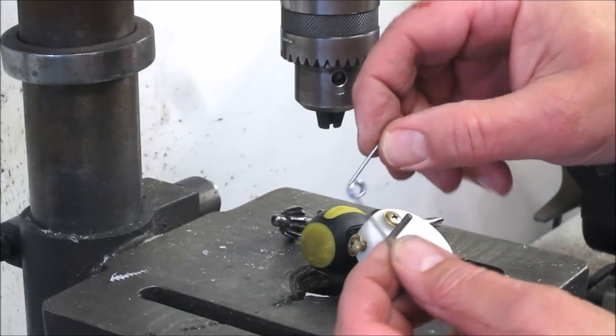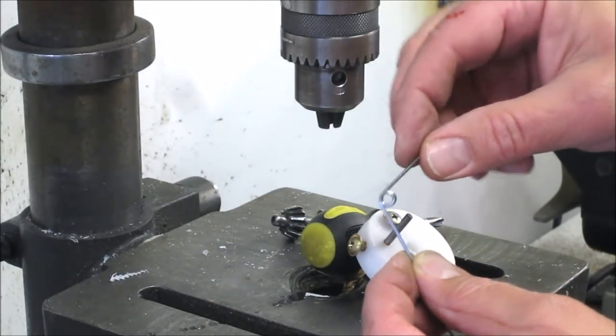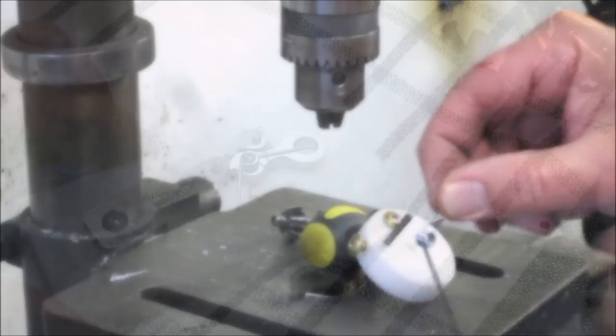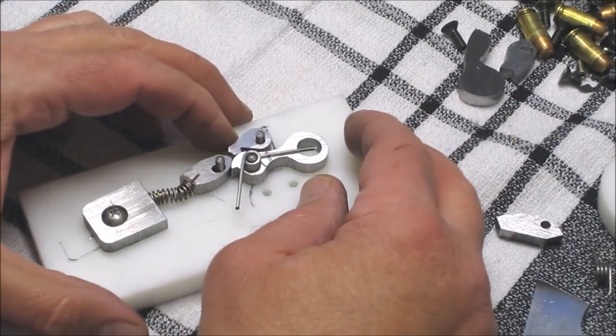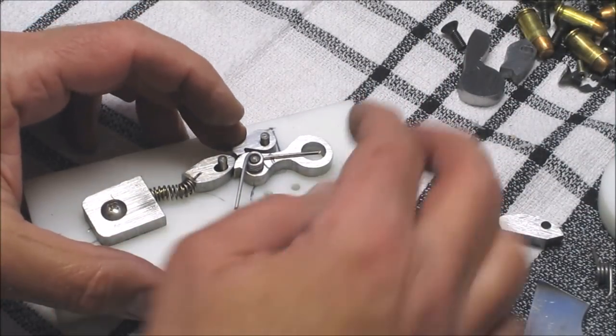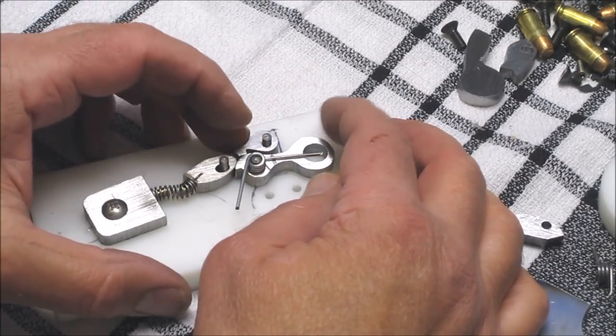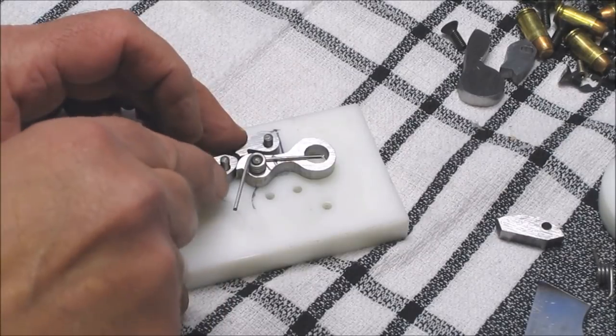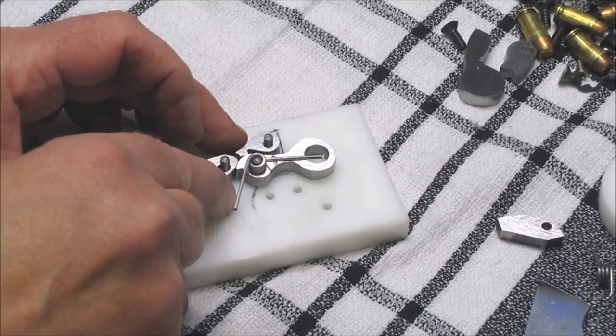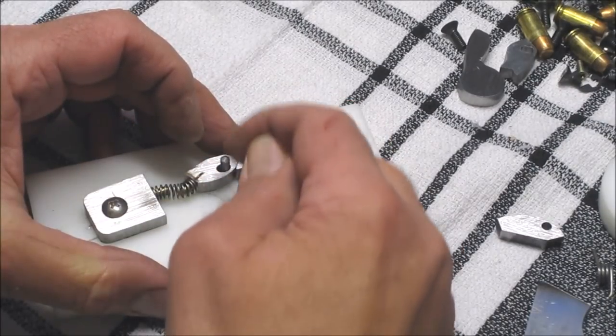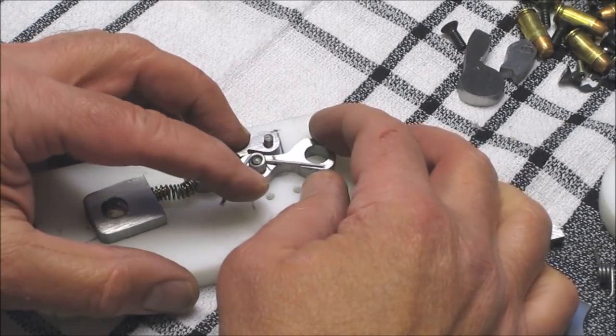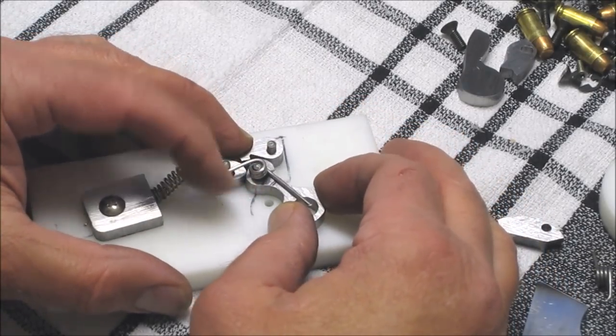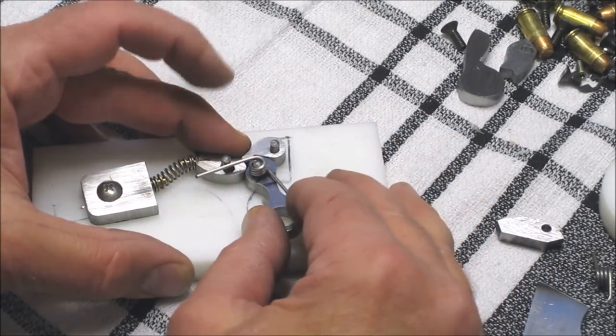There we go, nice little long spring. Now I just wound that spring just for demonstration purposes, but it almost looks like it'll work for this application. There's the hammer spring there - there'll be a post here to provide tension on the one arm here. So that looks like that might just be what I need to do.